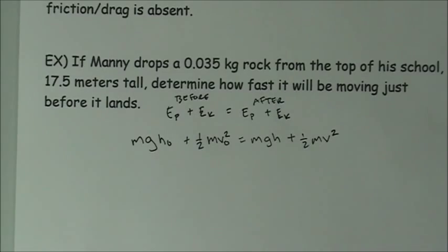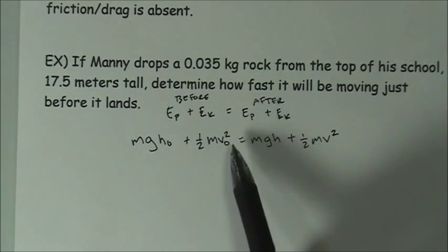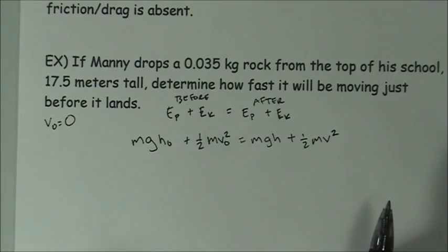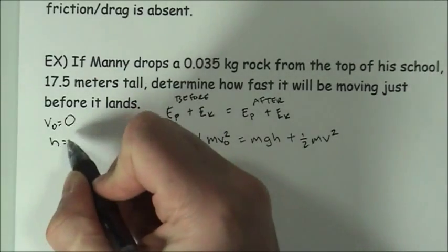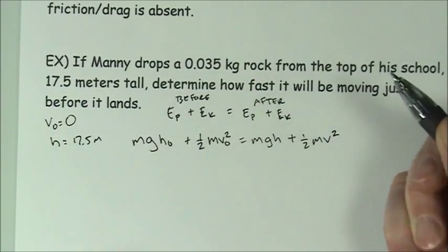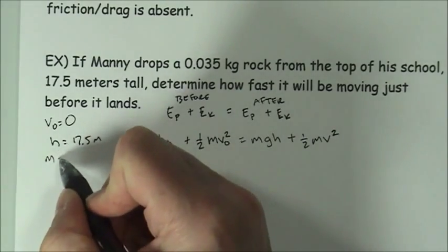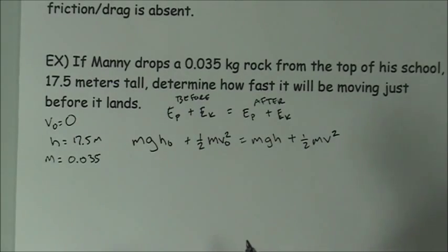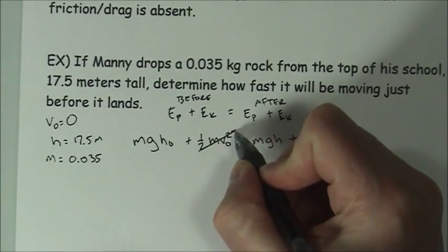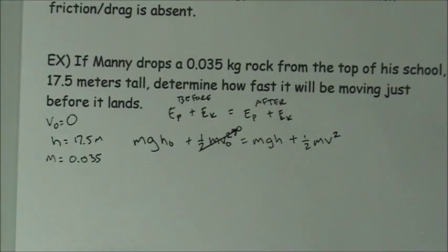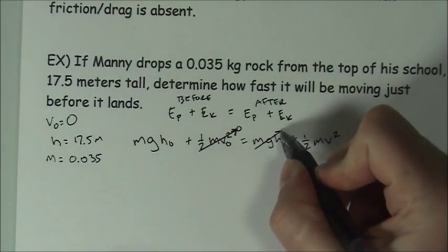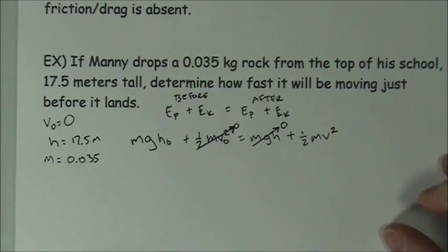In this problem though, it said that he dropped the rock. So that means that the initial velocity in this case must have been 0. The object had no initial velocity. It was dropped from a height of 17.5 meters and it has a mass of 0.035. So initially there is no velocity. So this would be 0. And we're talking about the rock landing. And so we want the rock to fall to where it has a height of 0. So that means that after the fall, this is 0. So there's no potential energy at the end.